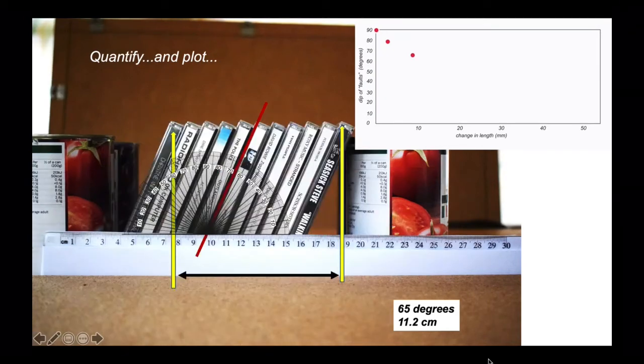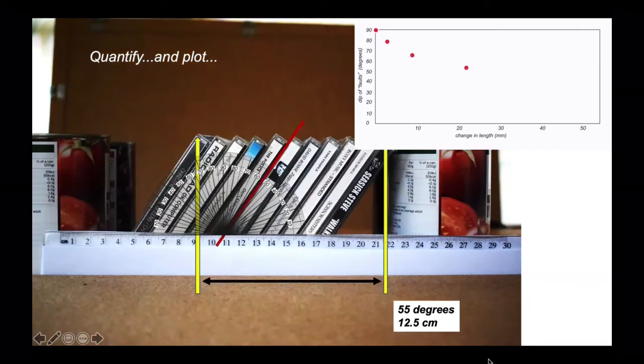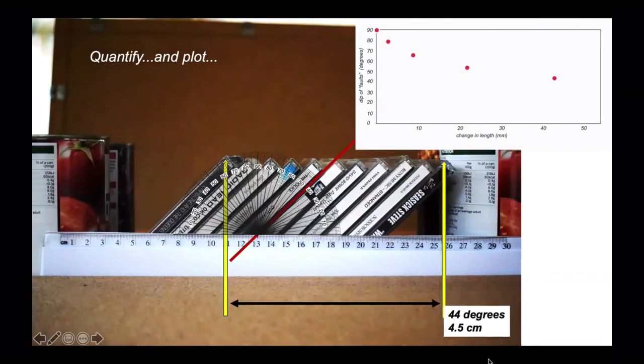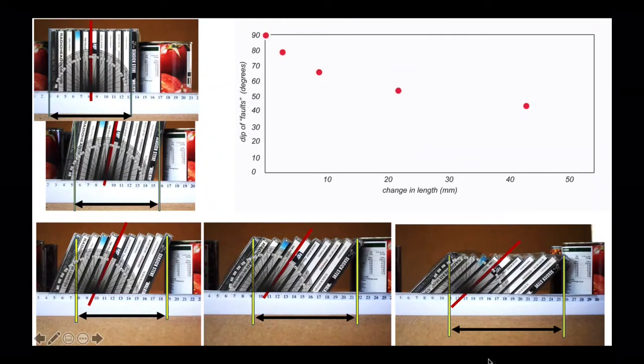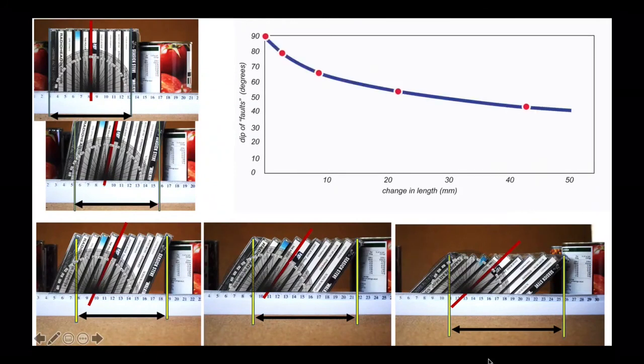Let's keep going. A bit more, a bit more. Here is our plot. We can fit a curve to those points, which shows how the dips of faults change as the change in length of our model increases.